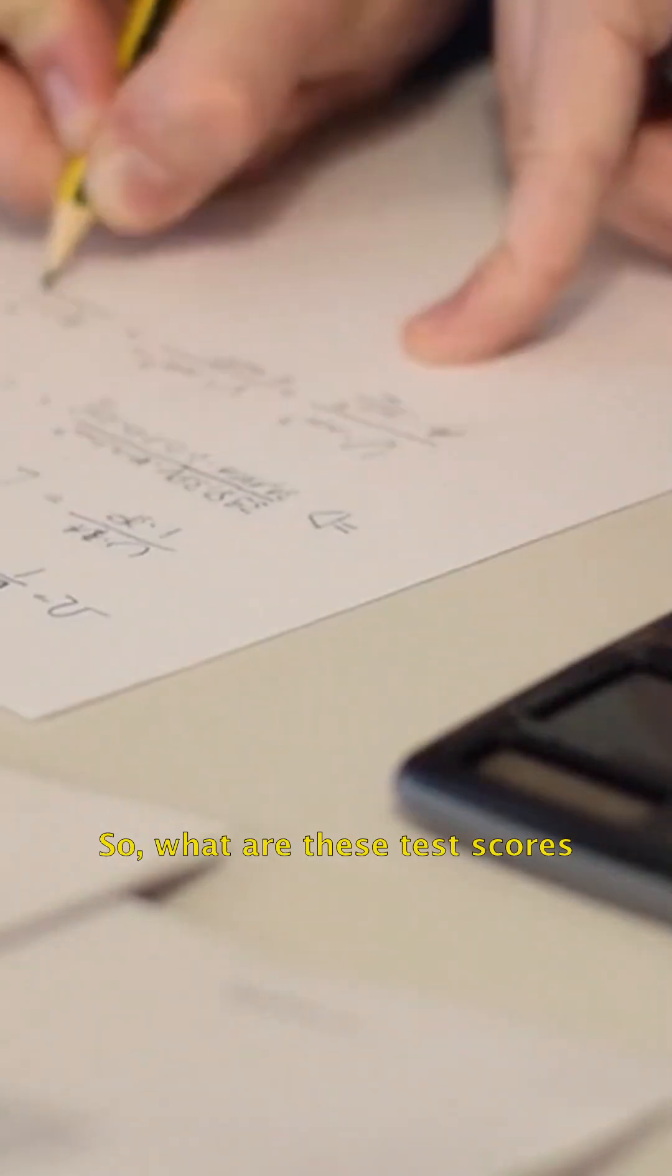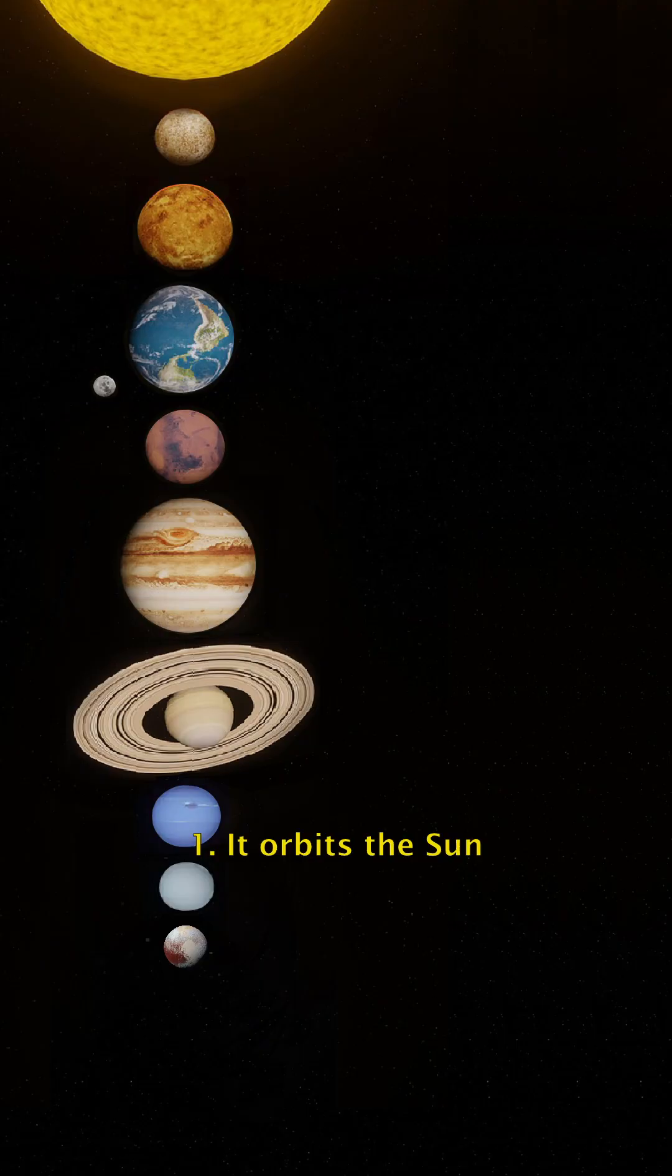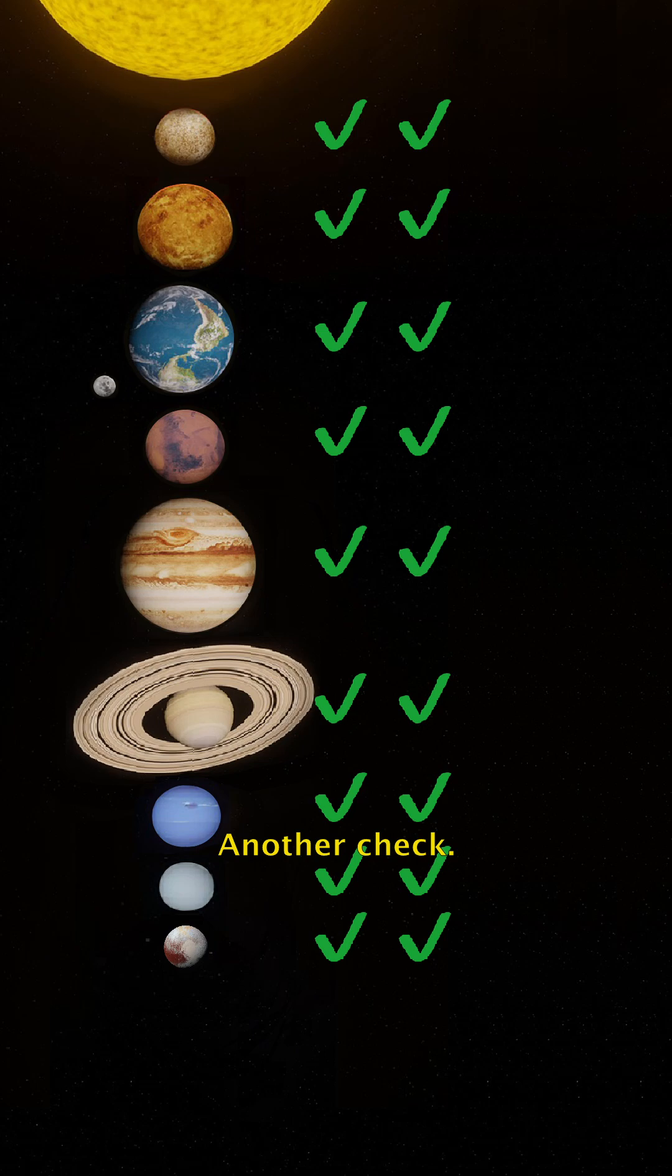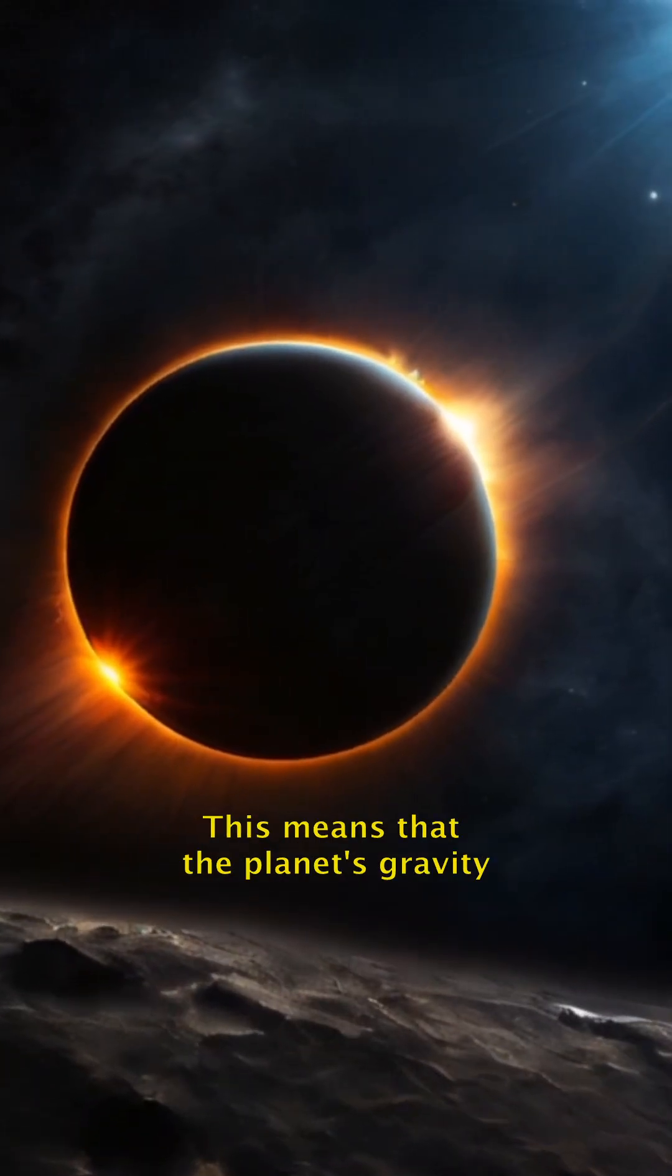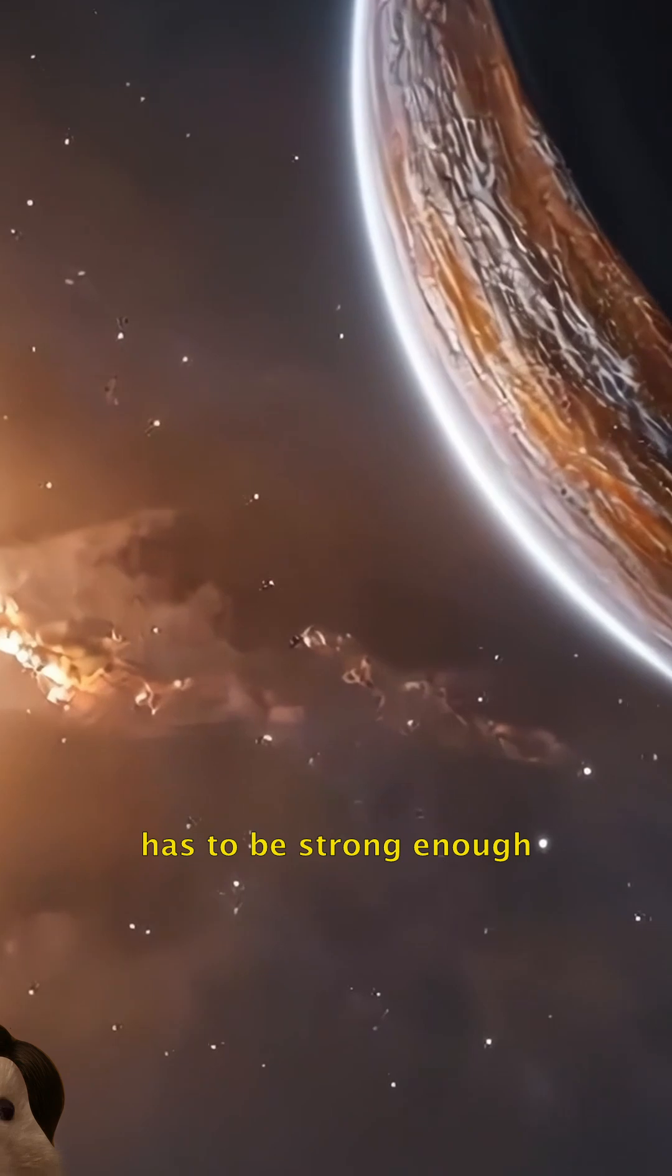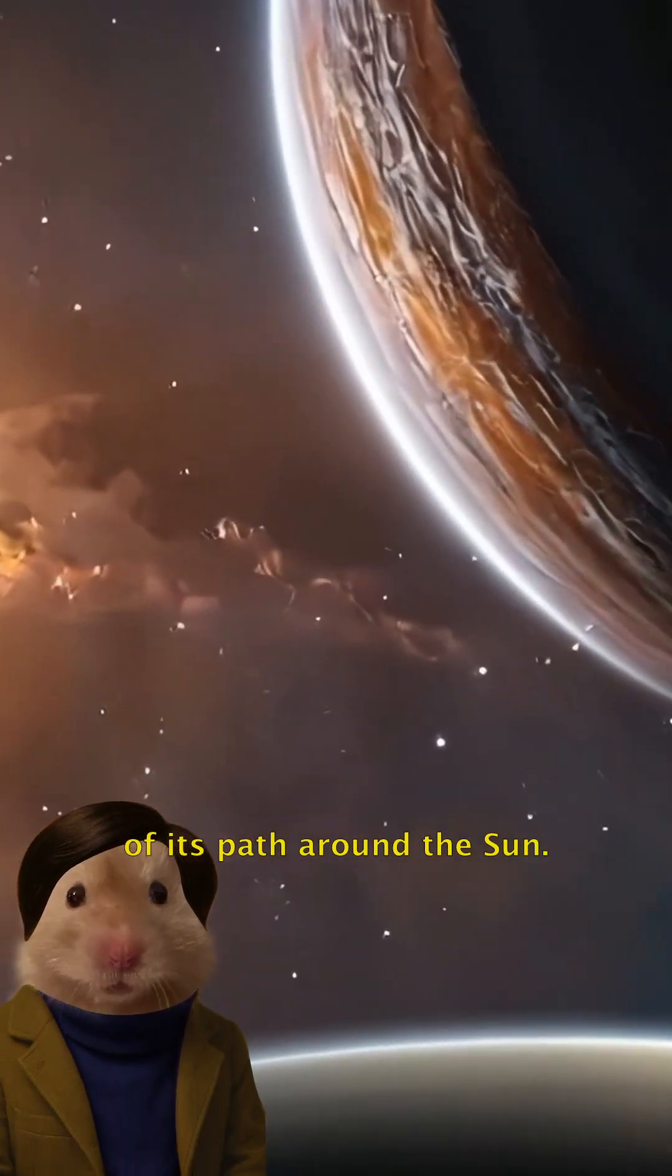So, what are these test scores that Pluto didn't get? Well, let's see. It orbits the sun. Check. It's round. Another check. It clears its orbit. Nope. This means that the planet's gravity has to be strong enough to push other objects out of its path around the sun.